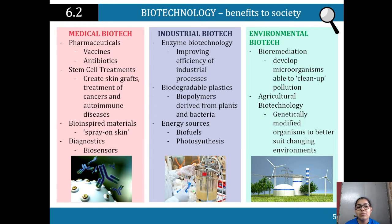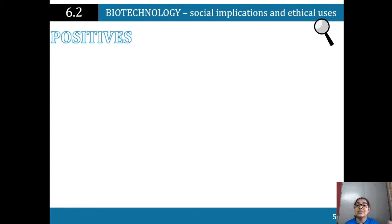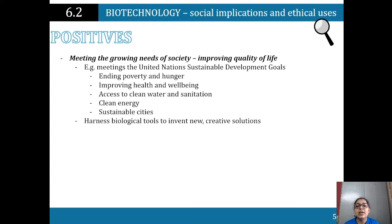There is also agricultural biotechnology — genetically modified organisms designed to better suit changing environments. A good example is Cavendish bananas, which have been modified to avoid a specific disease common in bananas. However, because Cavendish bananas are the same worldwide, this reduces biodiversity, actually making them more susceptible to that disease.